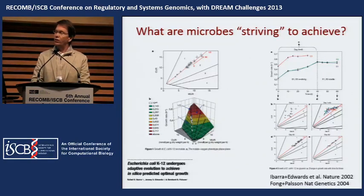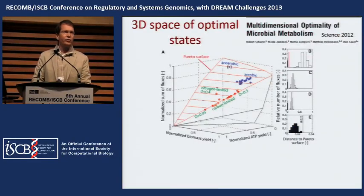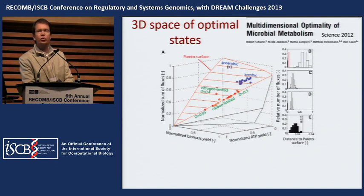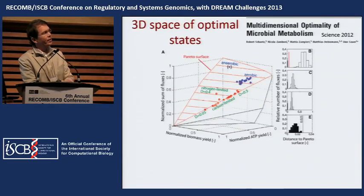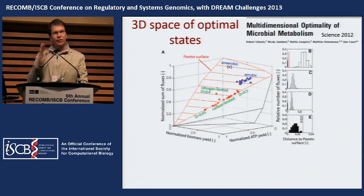Now we can resequence, find the mutations, and map omics data to figure out what the cell actually does. A detailed paper from Uwe Sauer's group at ETH looked at the actual objectives cells are trying to pursue, finding at least three attributes. One is the best use of the expressed proteome — you minimize the number of proteins you have to make to execute a particular flux state. There is also a tradeoff between growth and energy production, with the cell paying attention to one or the other depending on its growth state.